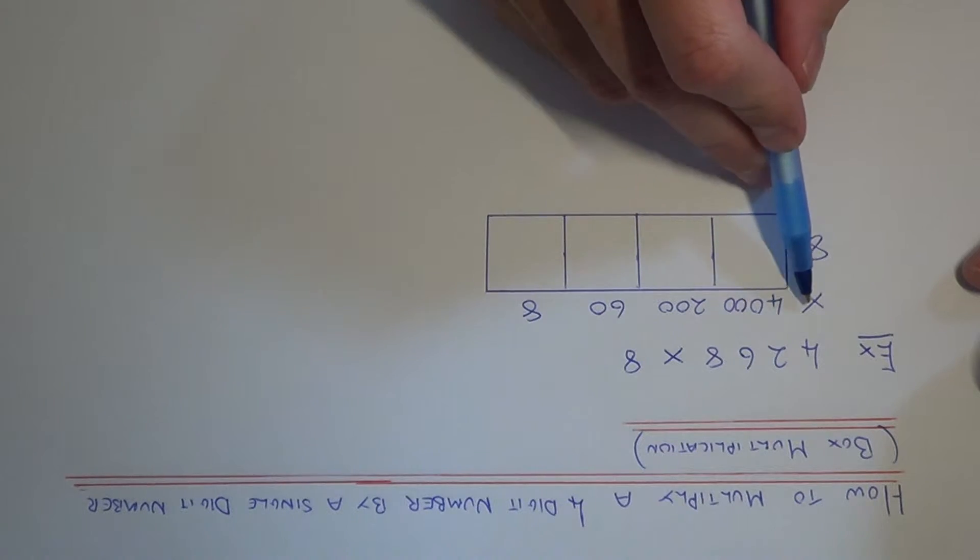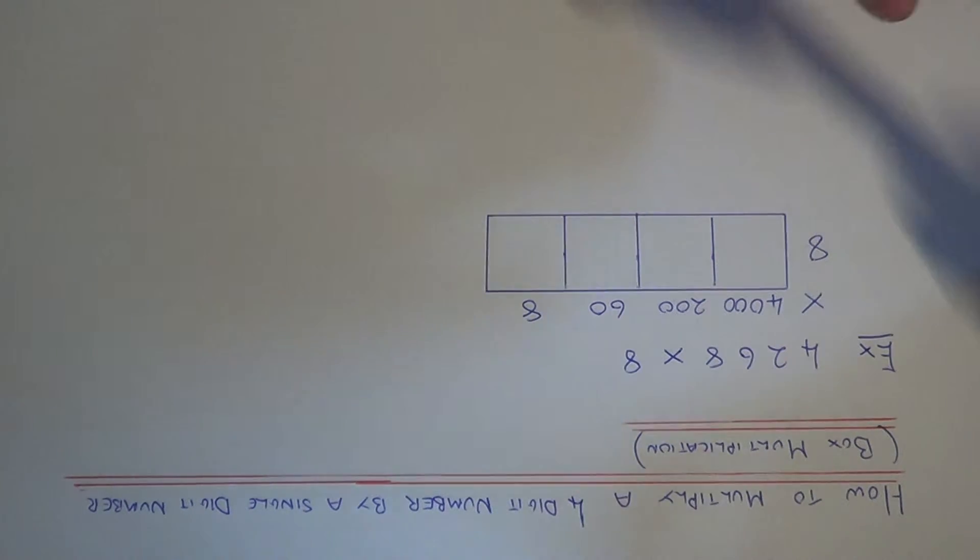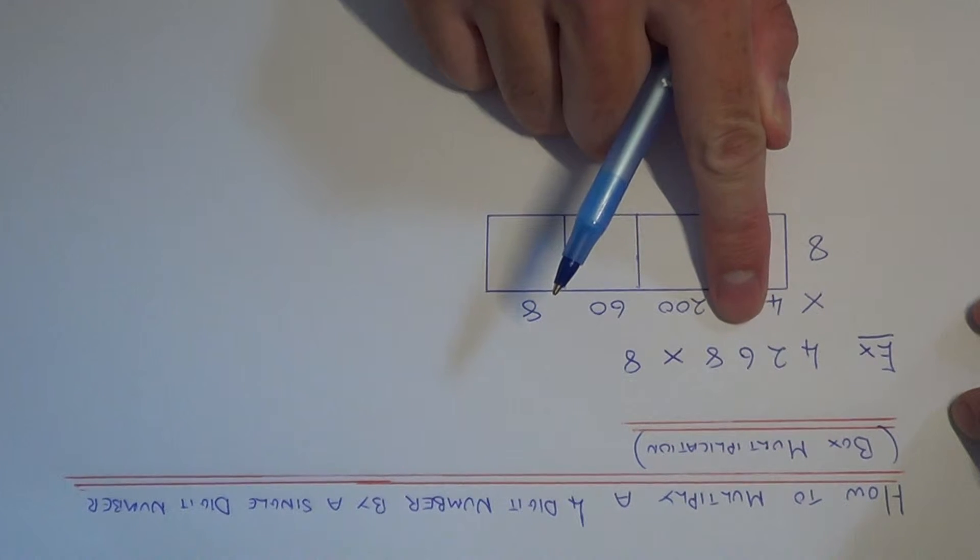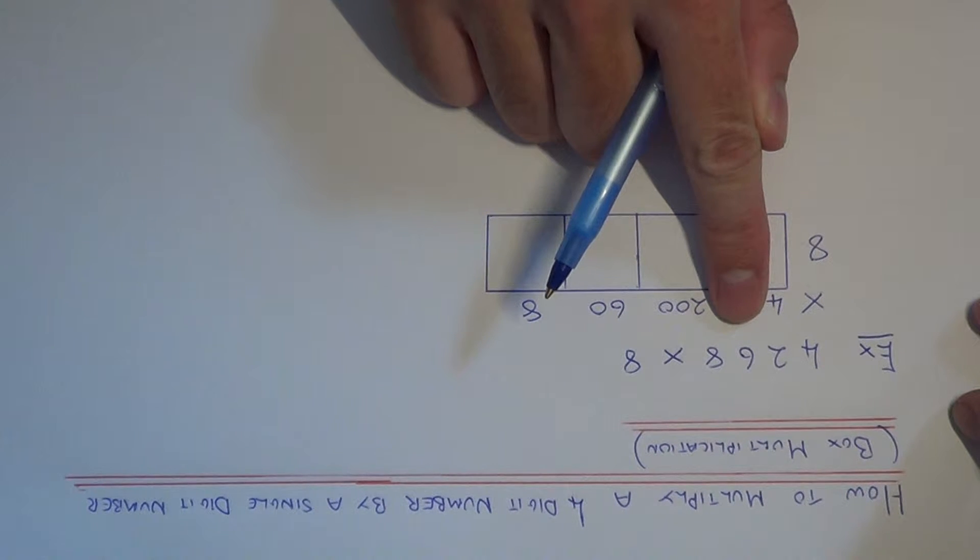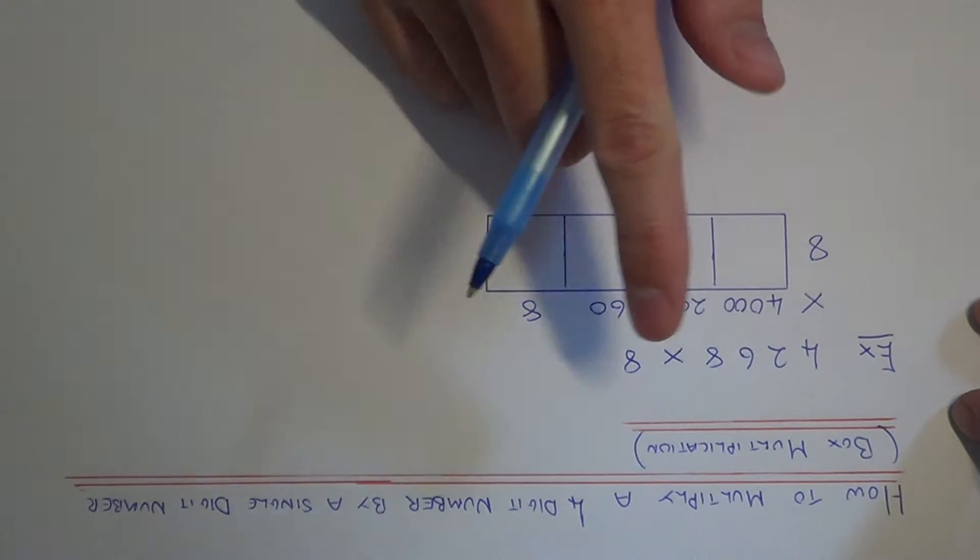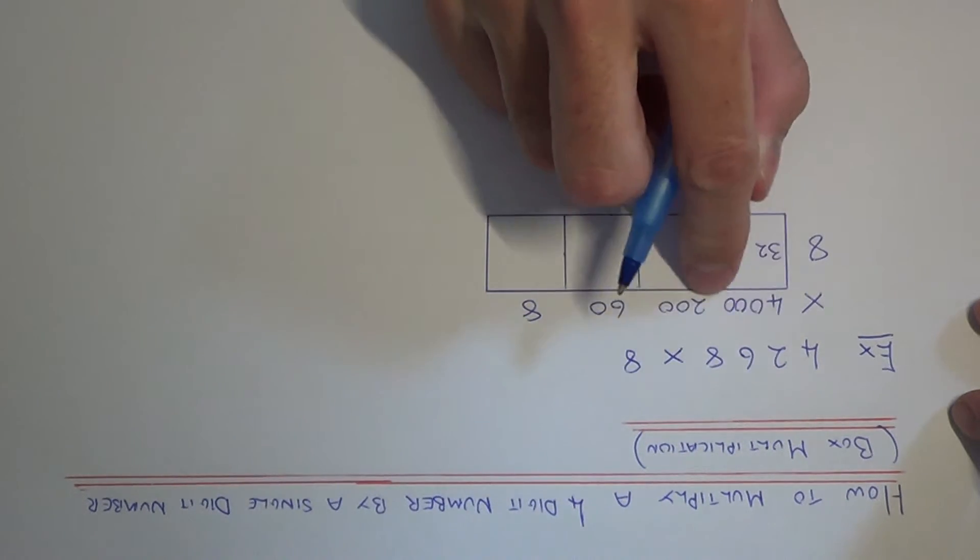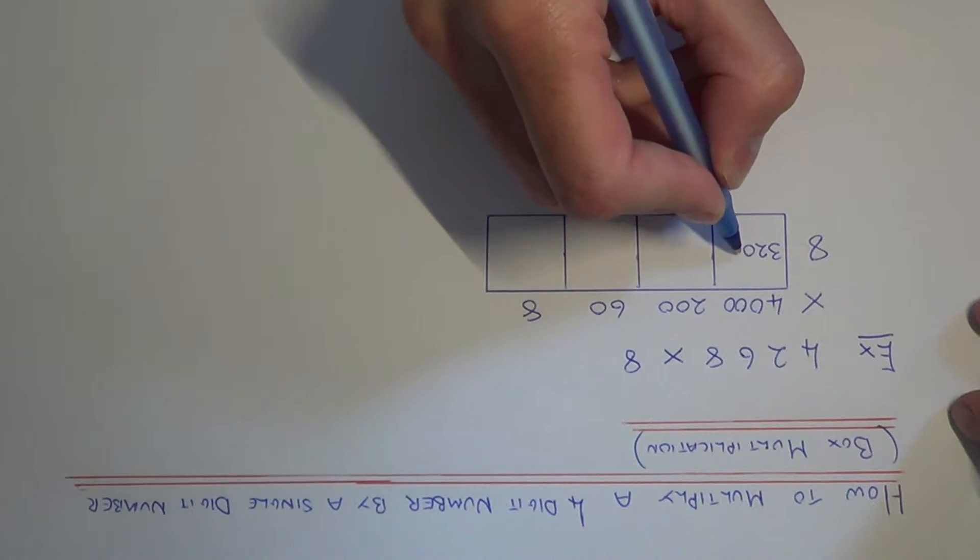Let's start off with 4,000 times 8. To make this easier we can cover up the zeros and then add the zeros back on. So we just need to do 4 times 8, which is 32.